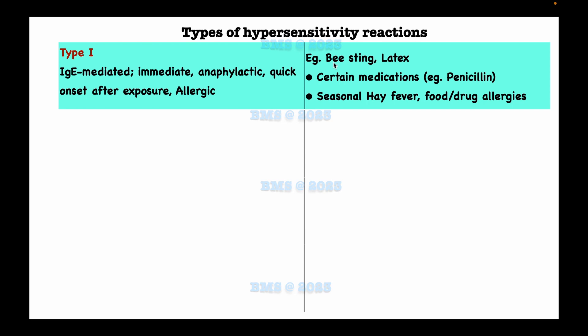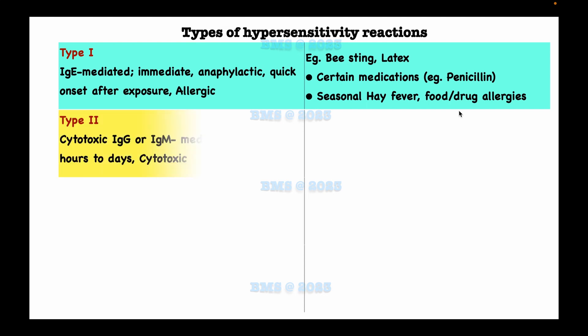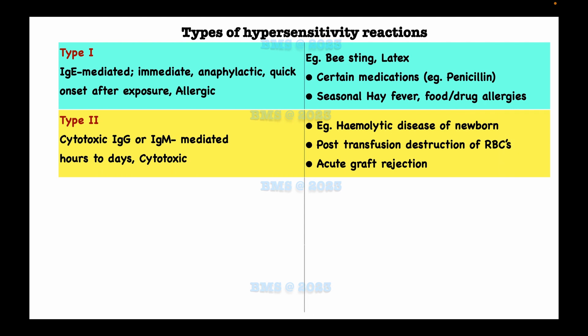We find type 1 hypersensitivity in bee stings, latex such as wearing new gloves, certain soaps, medications such as penicillin, seasonal hay fever, and food or drug allergies. Type 2 hypersensitivity reaction is known as cytotoxic and is mediated by immunoglobulin G or immunoglobulin M, occurring hours to days after exposure.